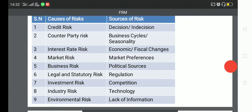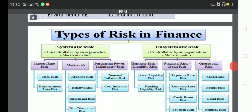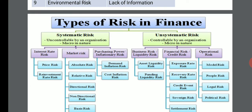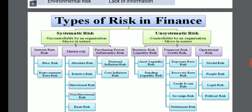In finance there are two types of risk: systematic risk and unsystematic risk. Systematic risk is uncontrollable by any organization and is macro in nature — it is related to the system and market as a whole. Unsystematic risk is controllable by the organization and is micro in nature, meaning it is related to the particular organization.